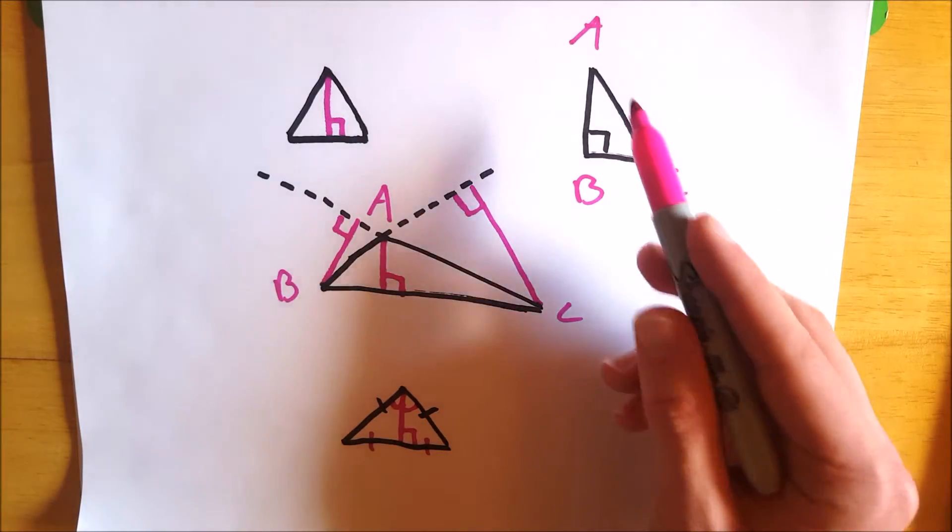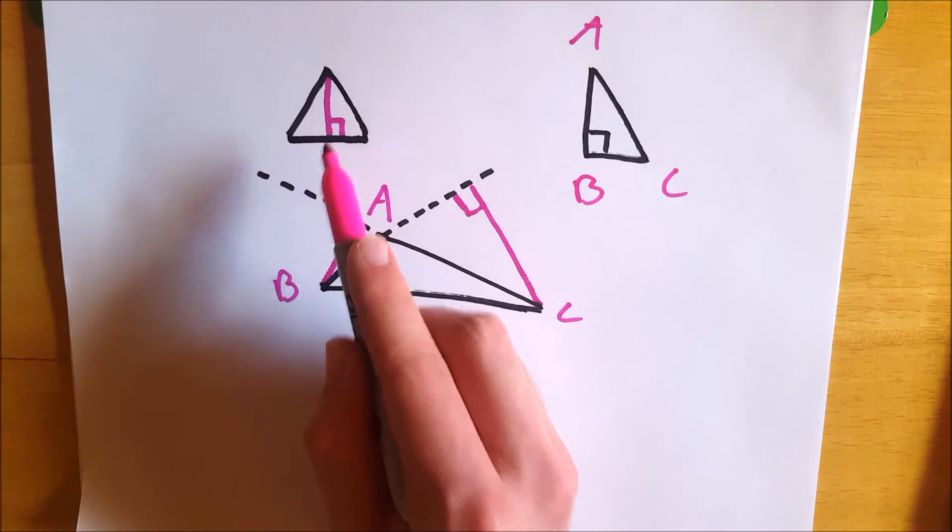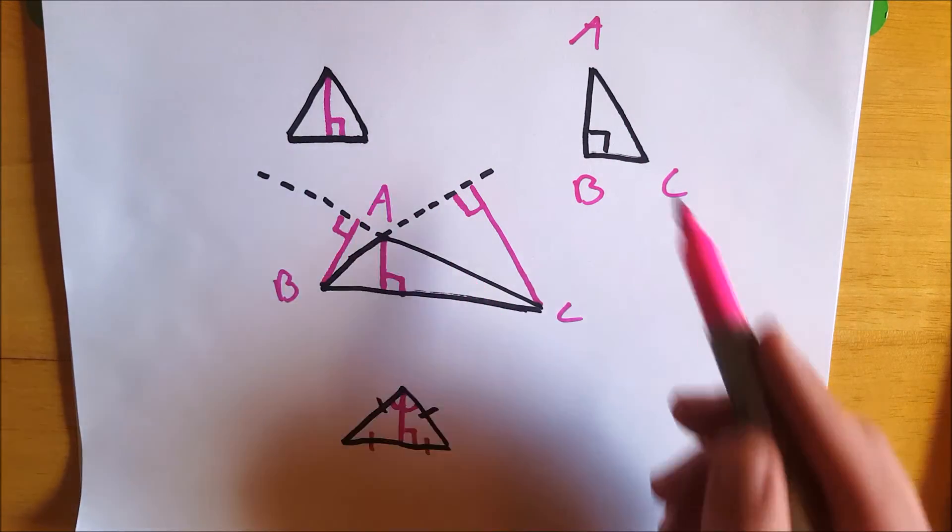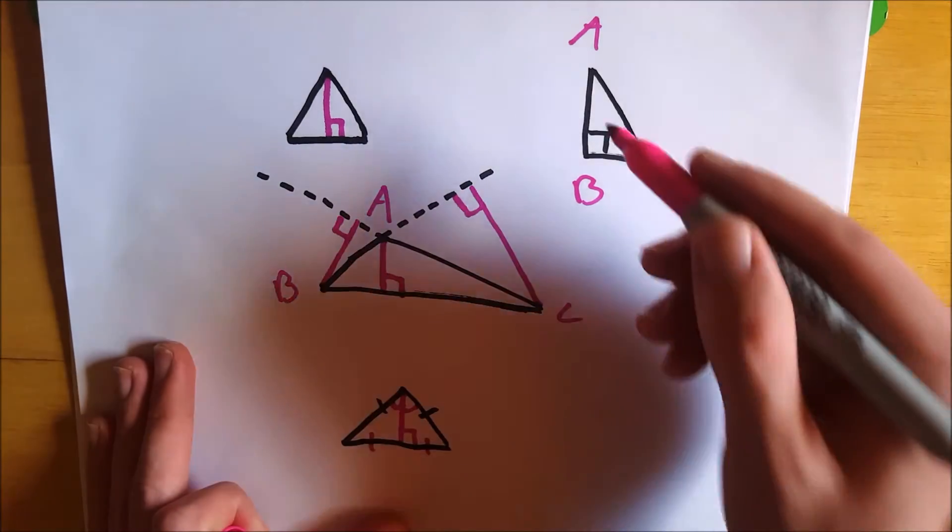So in this case, instead of the altitude landing inside the triangle or outside the triangle, it lands on the triangle on the edge. So that's interesting.